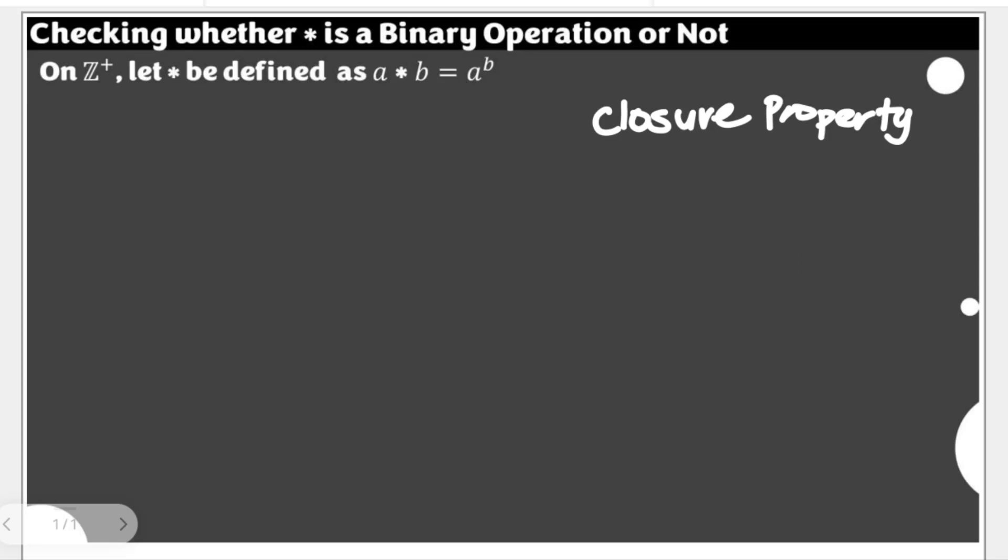Of course, the first thing we need to consider is whether the set is non-empty. Our set here is Z+. That would mean it's a set of all positive integers, which starts with 1, 2, 3, and so on and so forth. They are all positive integers. Let's just have it like that because we have infinitely many elements on the set Z+.